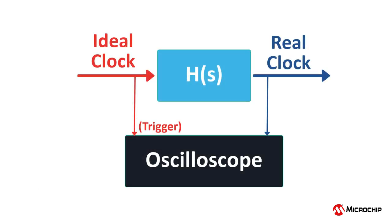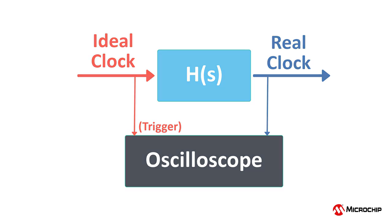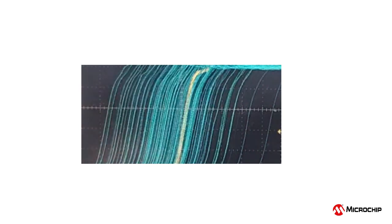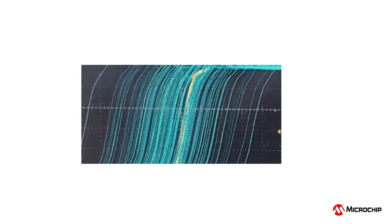On an oscilloscope, we can view TIE jitter by triggering off of a very clean clock, such as the output of a crystal oscillator. We can then measure a clock of the same frequency that is the output of a system that uses this clean clock as an input. In this example, the ideal clock is approximated as the input to the system, and the real clock is the output of the system. We can see the real clock edge in blue is jittering around the ideal clock edge in yellow.